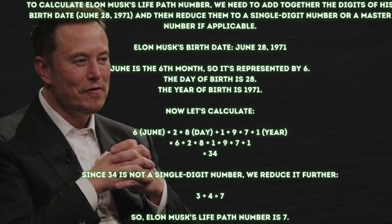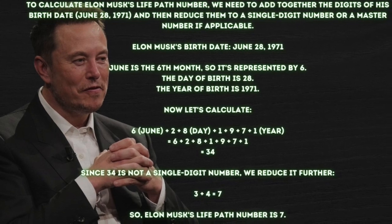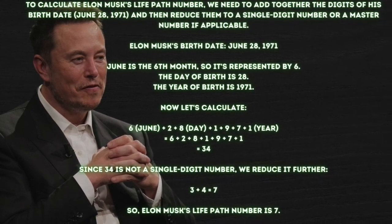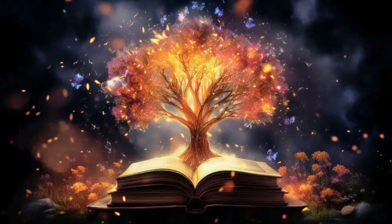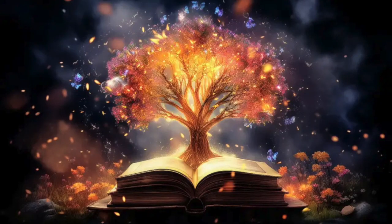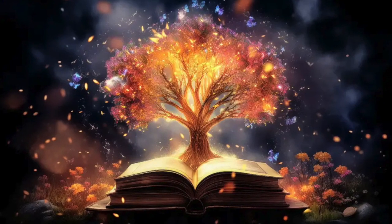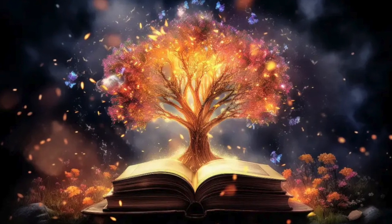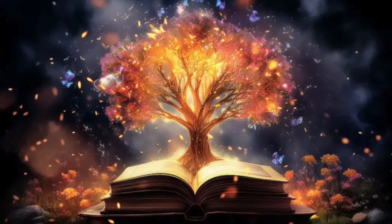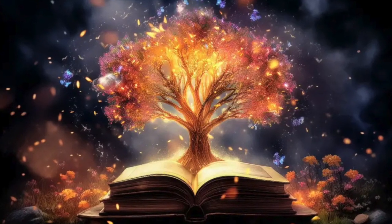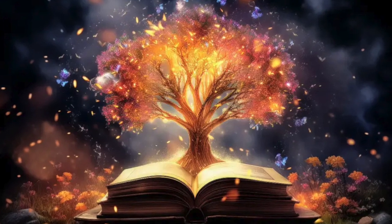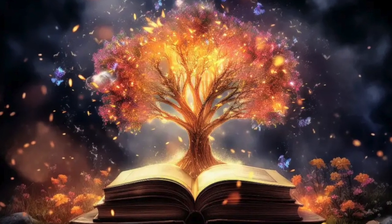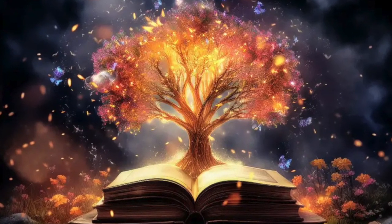A life path number of 7 suggests that he is likely to be analytical, introspective, and spiritually inclined. People with this life path number often possess a deep inner wisdom and a strong desire for knowledge and understanding. They are often drawn to scientific or spiritual pursuits and may have a knack for uncovering hidden truths or solving complex problems.